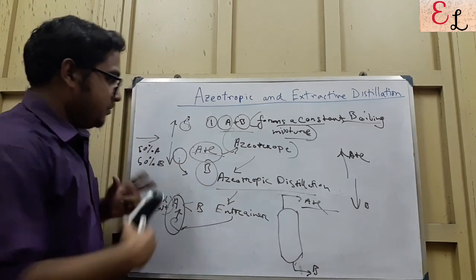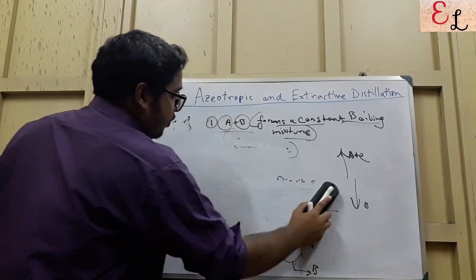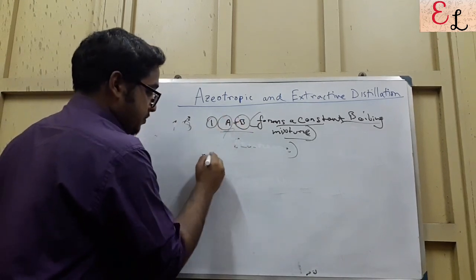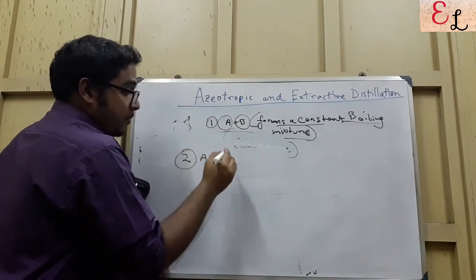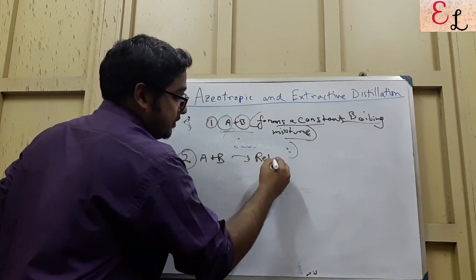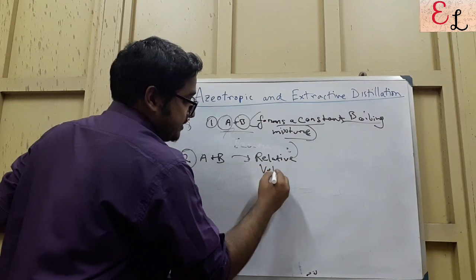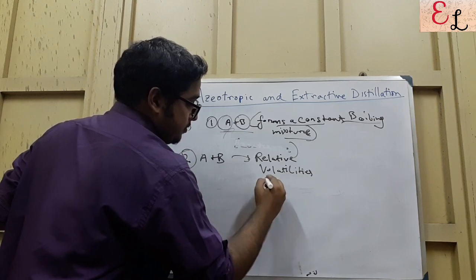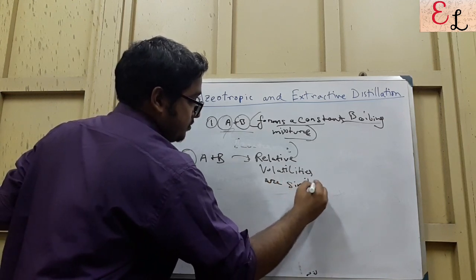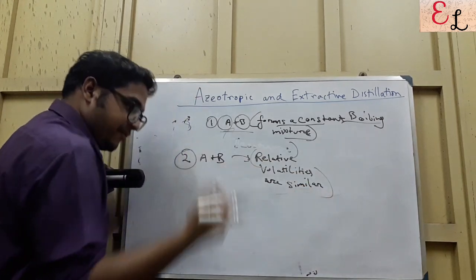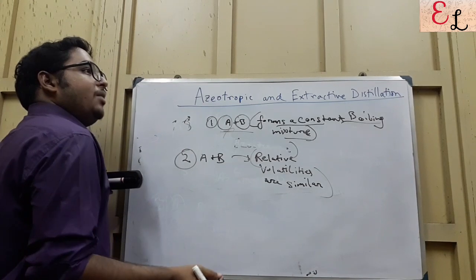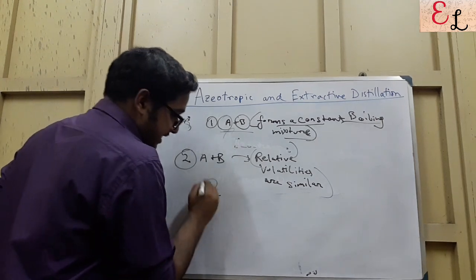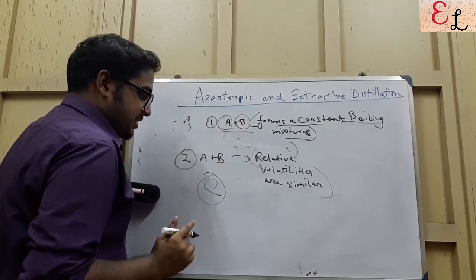Now we go for extractive distillation. Extractive distillation also applies when A and B cannot be separated — in this case because their relative volatilities are similar. They have similar volatilities, and both of them tend to fly off in the vapor or both tend to remain in the liquid simultaneously. So we add C, an entrainer, similar to azeotropic distillation.